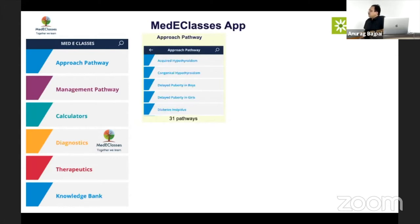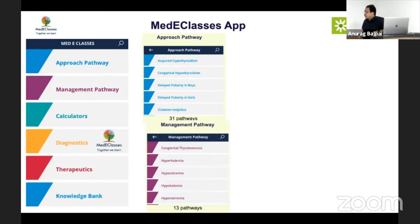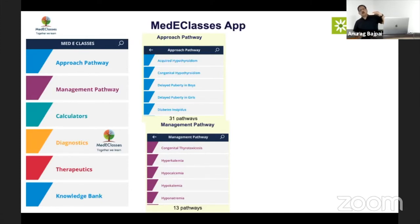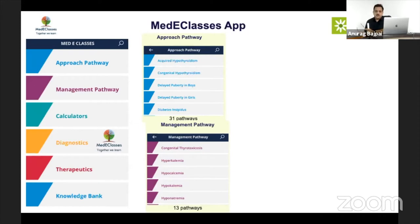We have 31 approach pathways which basically cover every condition you will encounter as a pediatric endocrinologist, and around 13 management pathways. These pathways look simple when you solve them but are actually very complicated algorithms. Various weight edges are given to different situations so that we select the lowest resources required to reach a diagnosis — for example, IGF-1 is kept at the end for growth failure evaluation, and calcitriol at the end for calcium disorders. The algorithm ensures a resource-appropriate and cost-beneficial approach.